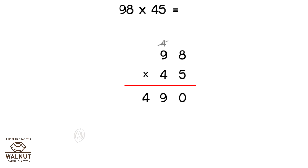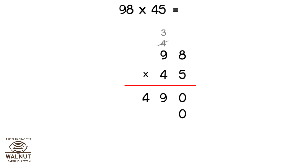Then we write the 0 in the units place in the next line and start multiplying by 4. 4 into 8 is 32. We write 3 above the next number and 2 below. Then we do 4 into 9 — that is 36. Here we add the 3, which becomes 39.